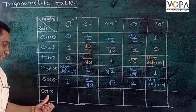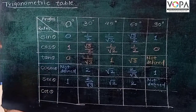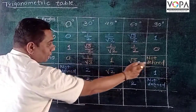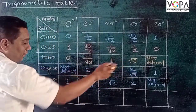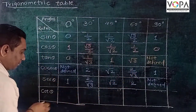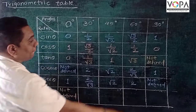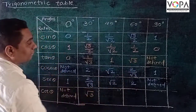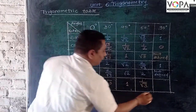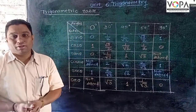Now if we want to make the table for cot θ, we know that cot θ = 1/tan θ. So cot 0° = 1/0, which is not defined. By writing these values in reverse direction: cot 30° = √3, cot 45° = 1, cot 60° = 1/√3, and cot 90° = 0. In this manner you can easily make the trigonometric table for all ratios.